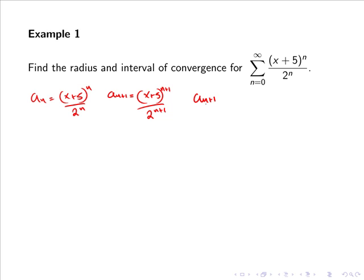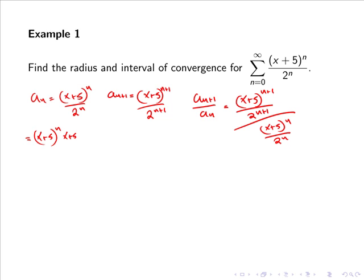So a_{n+1} divided by a_n equals (x plus 5) to the power of n plus 1 all divided by 2 to the n plus 1, divided by (x plus 5) to the power of n all over 2 to the n. Rewriting this, we have (x plus 5)^n times (x plus 5)^1 all divided by 2^n times 2^1. Now multiplying by 2^n over (x plus 5)^n, the 2^n and (x plus 5)^n terms cancel, and we are simply left with (x plus 5) all over 2.